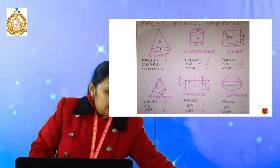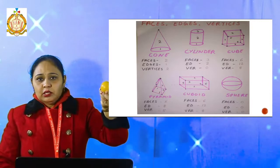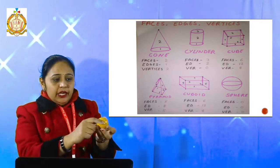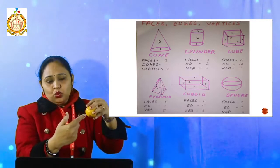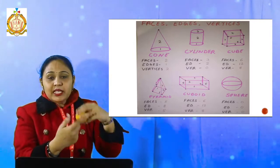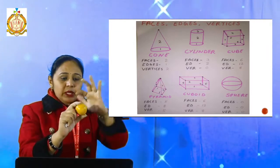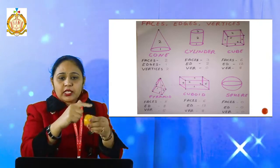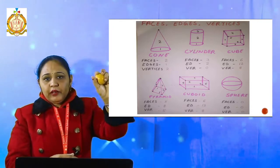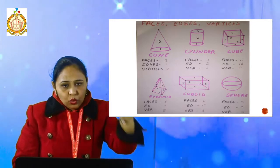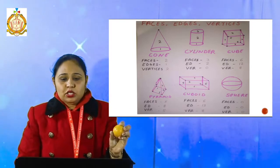Then there is a sphere. Now see the sphere — no corner is there, no straight line is there. It has a curved surface — it is curved from every side. That means it has no face, no vertex, and no edge.